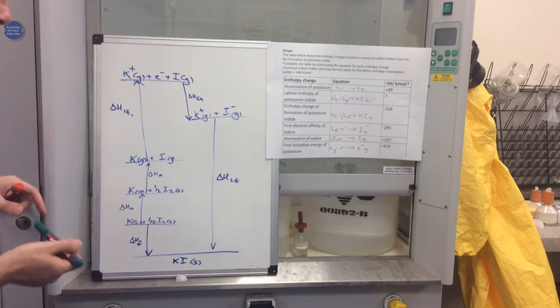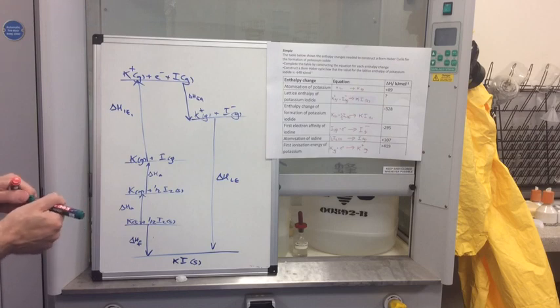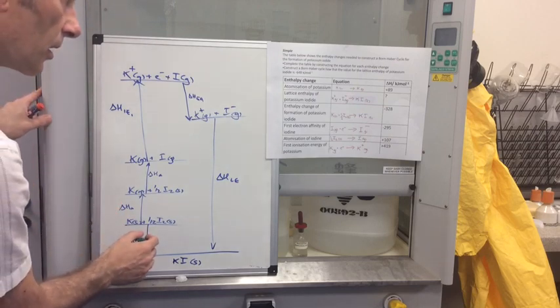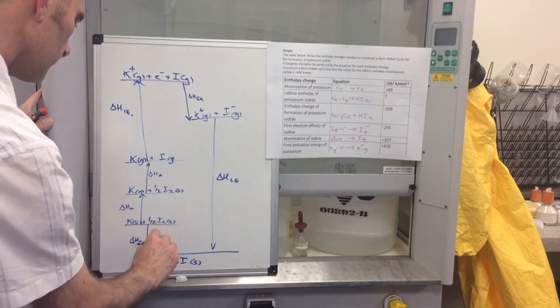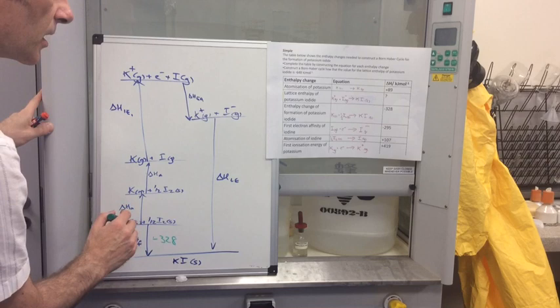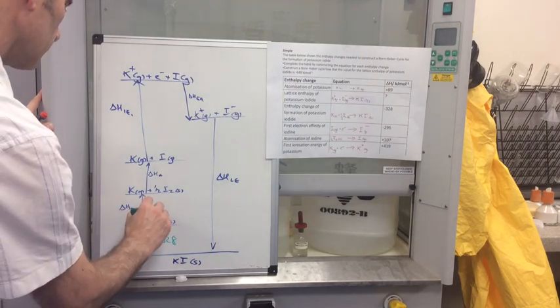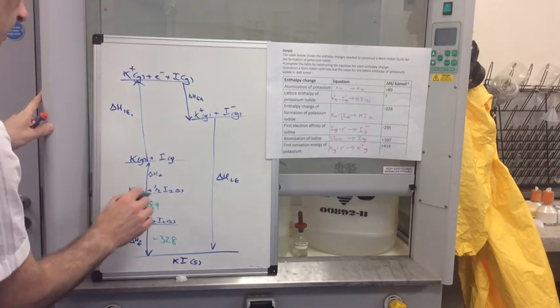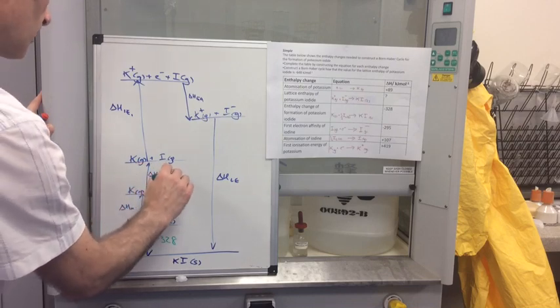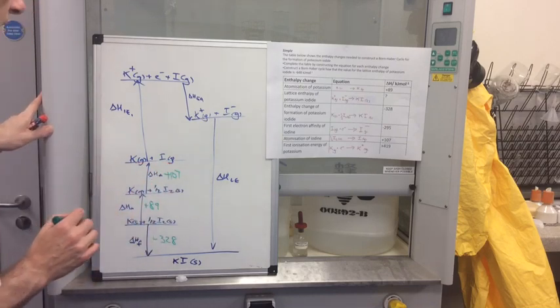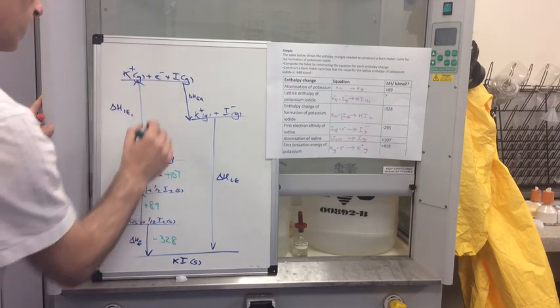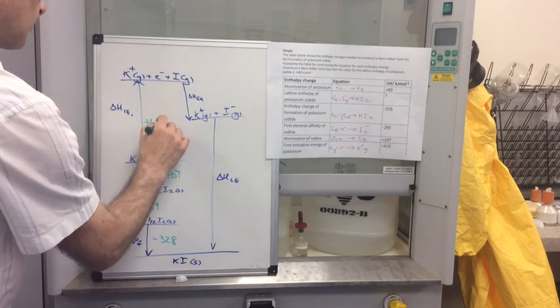So we'll put the numbers in now. We've got the cycle all drawn up there. So delta H formation is minus 328. Atomization of potassium is plus 89. The atomization of iodine is plus 107. And the first ionization energy of potassium is plus 419.